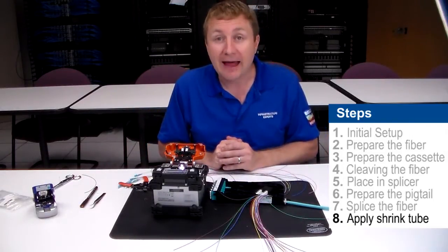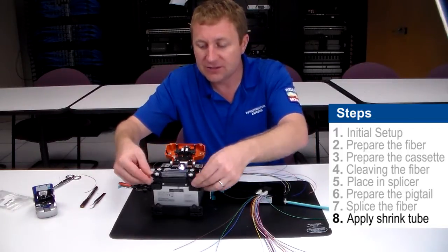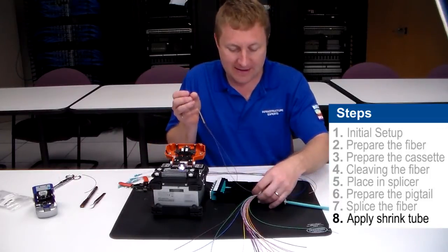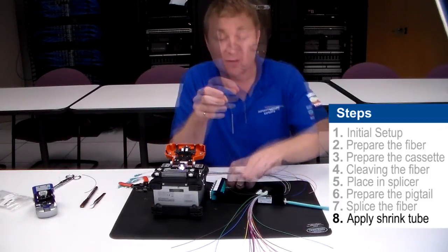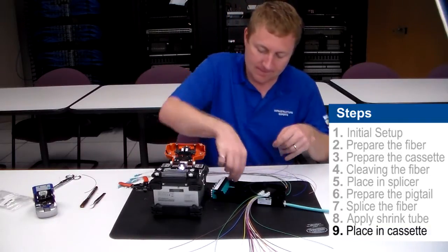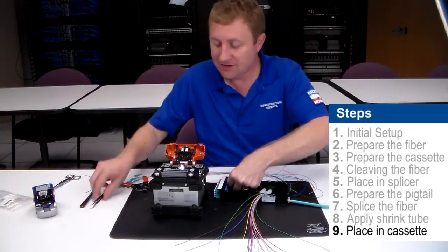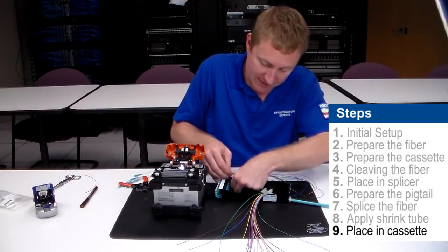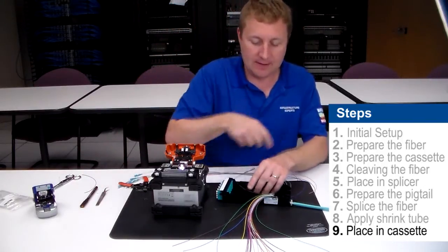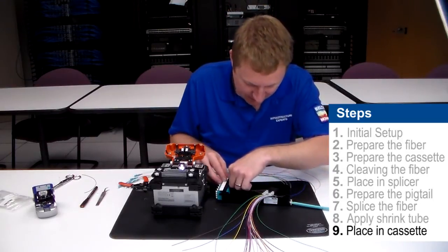Our splicer has beeped at us now telling us that the shrinking operation has completed. We're just going to simply open the oven and make sure that we have a good shrink. So from here we can now place our fiber into the splice cassette. Be careful, that shrink might be hot. So I usually find it easiest at this point to remove the fiber and we're simply going to place it in and connect in the bottom adapter.